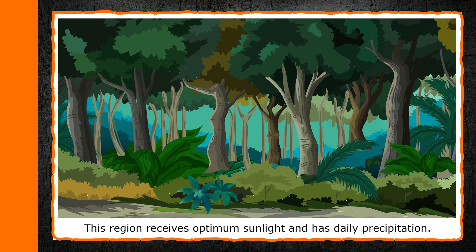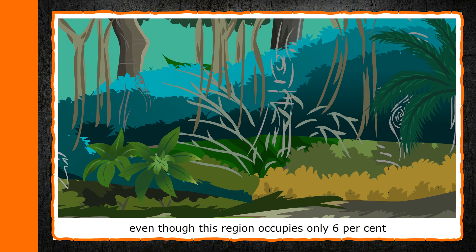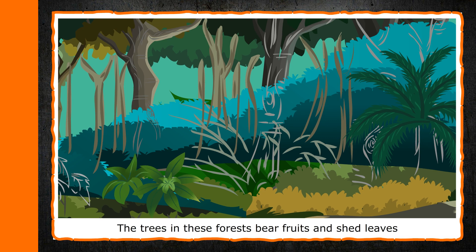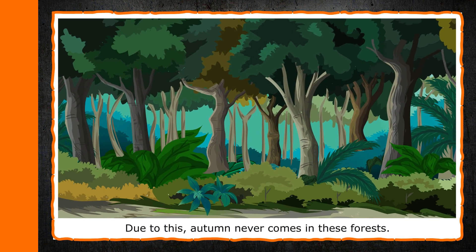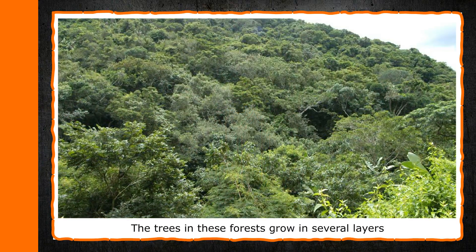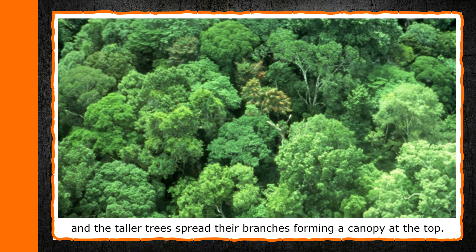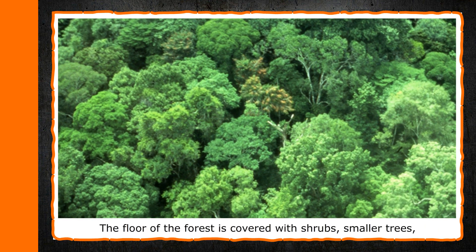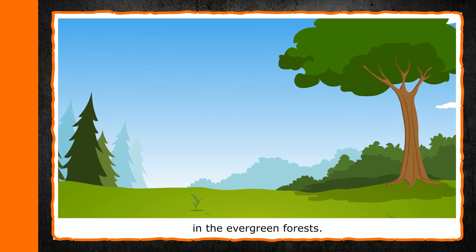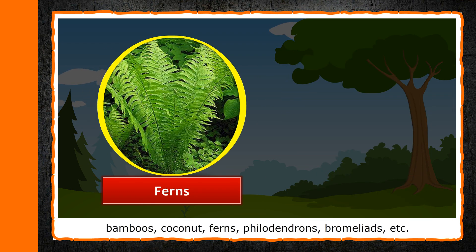Vegetation. This region receives optimum sunlight and has daily precipitation. That is why approximately 50 percent of the world's plants are in this area, even though this region occupies only 6 percent of the total land area on earth. The trees in these forests bear fruits and shed leaves but at different times of the year. Due to this, autumn never comes in these forests, and they are therefore also called evergreen forests. The trees grow in several layers and the taller trees spread their branches forming a canopy at the top, preventing sunlight from passing through. The forest floor is covered with shrubs, smaller trees, creepers, etc. Various types of ferns are also found in abundance. Some commonly found trees are lianas, kapok, bamboos, coconut, ferns, philodendrons, bromeliads, etc.